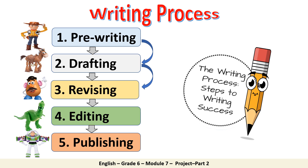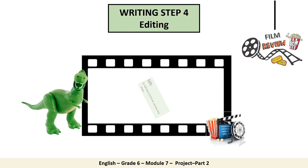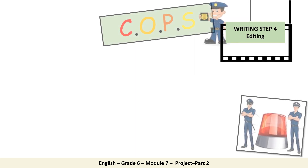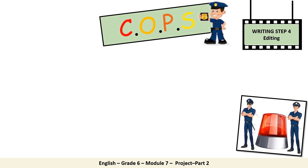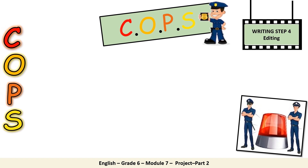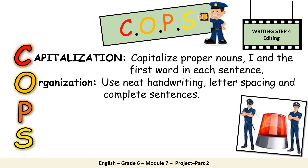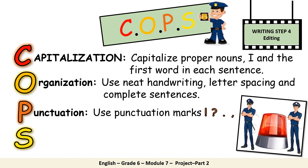Having finished revising, let's move to the next step, which is editing. In order to edit, you have to correct any spelling, punctuation, and organization mistakes. To edit, you use the COPS strategy. The C stands for capitalization — capitalize proper nouns, I, and the first word in each sentence. The O stands for organization — use neat handwriting, letter spacing, and complete sentences. The P stands for punctuation — use punctuation marks. The S stands for spelling — spell words correctly.